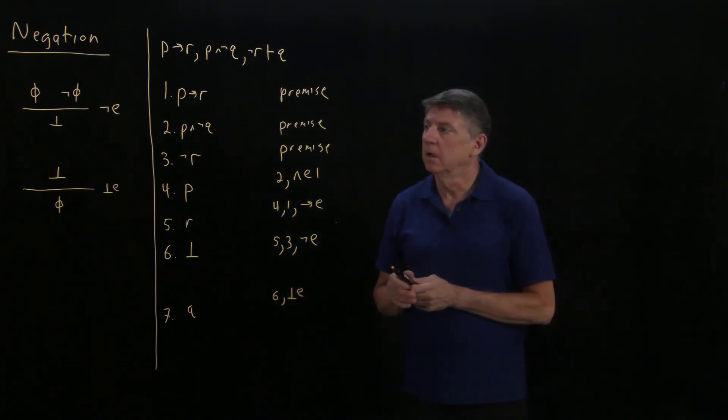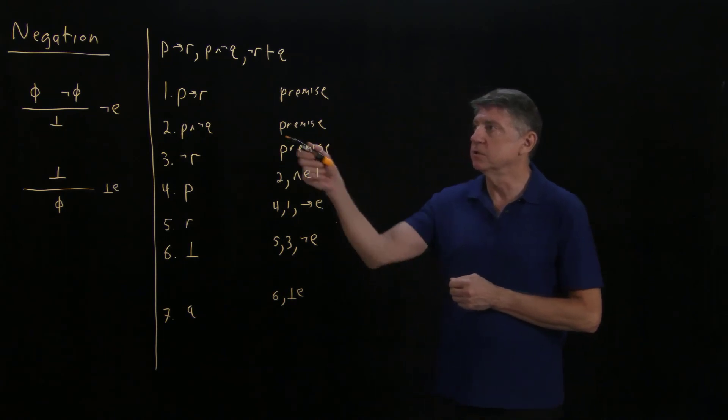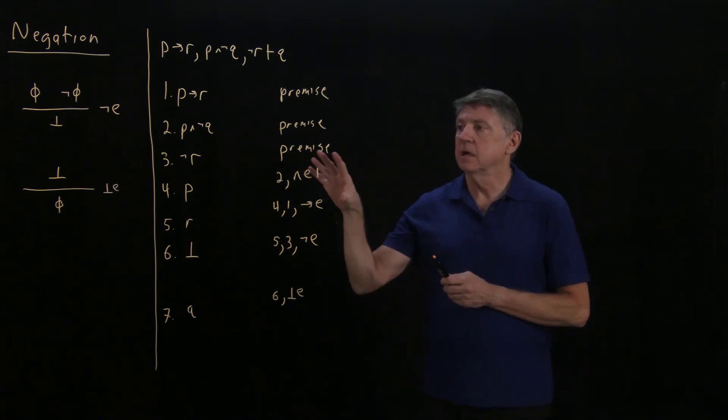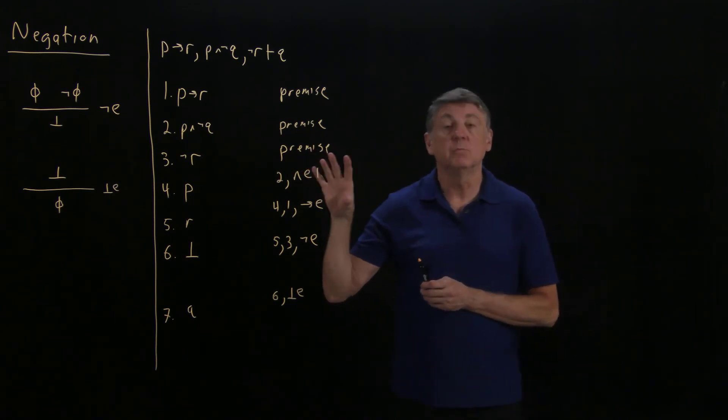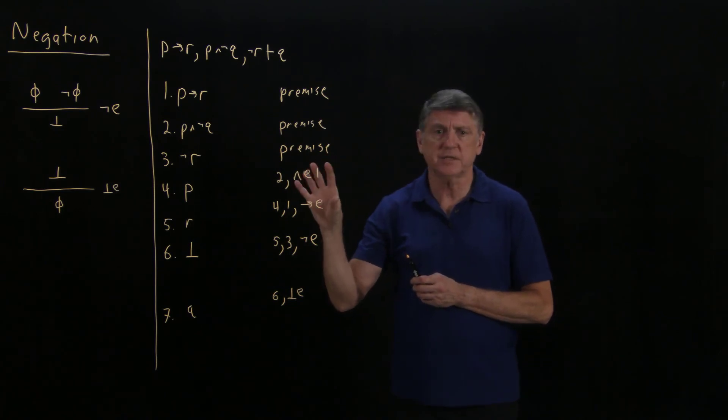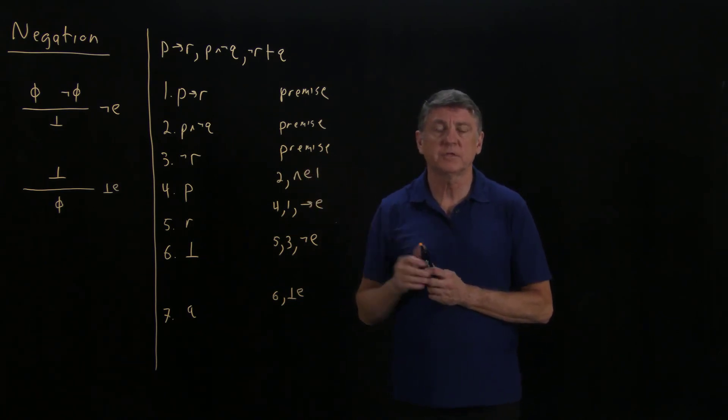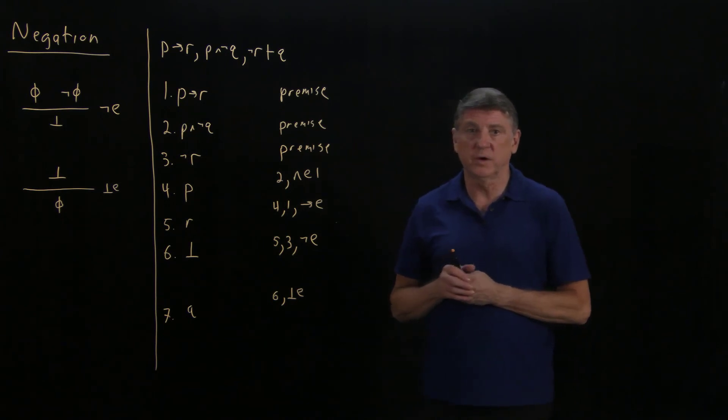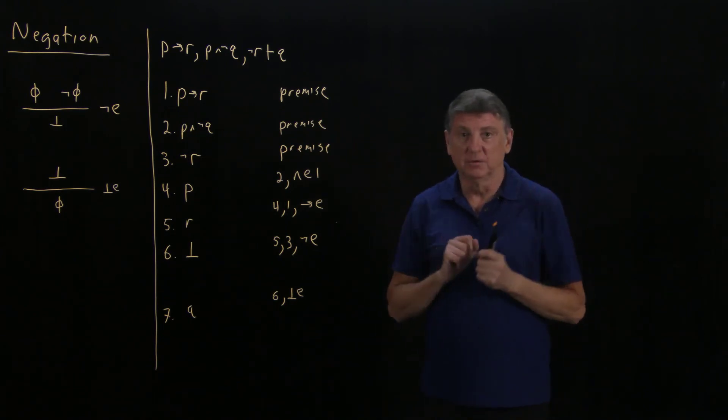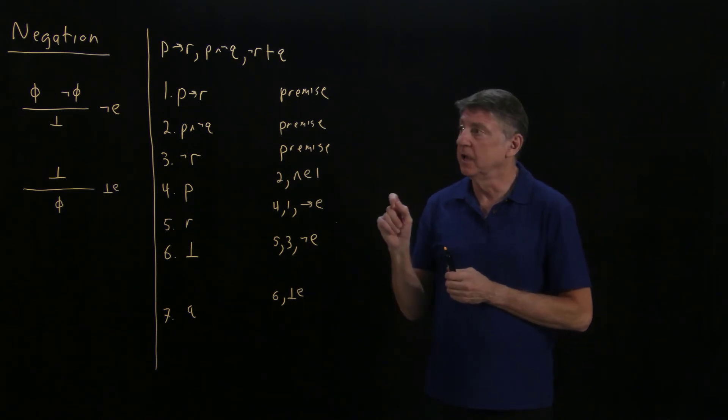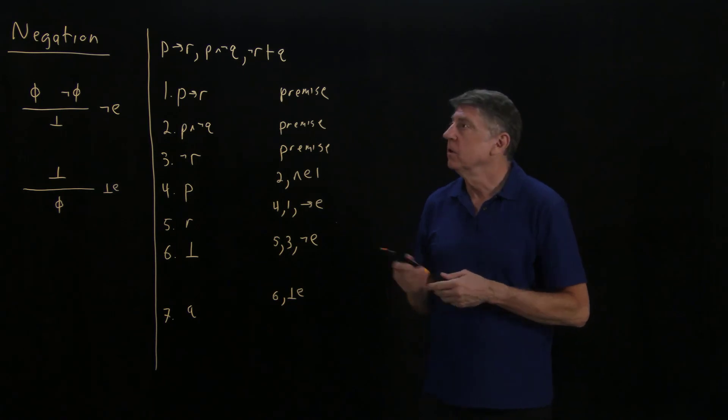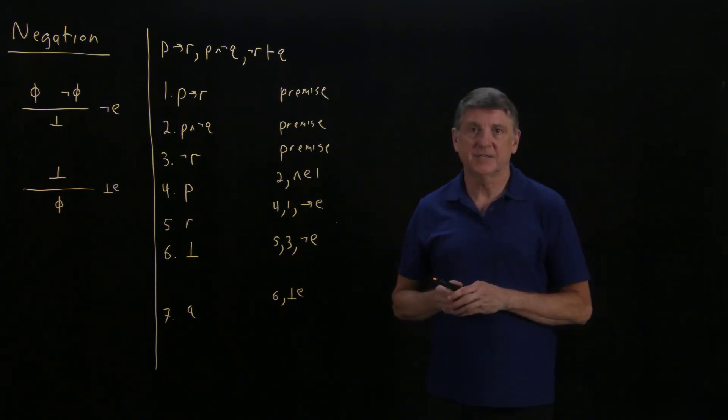So as I said earlier, there are two main uses for these rules that involve negation. This is one that we'll use much later in these sessions, which is we've shown that the premises are inconsistent. The other main use in proofs, that is in valid proofs, and valid proofs are ones where we have good premises and a good conclusion, and those are ones that involve proof using contradiction. So that ends this session, which is on the negation rules.